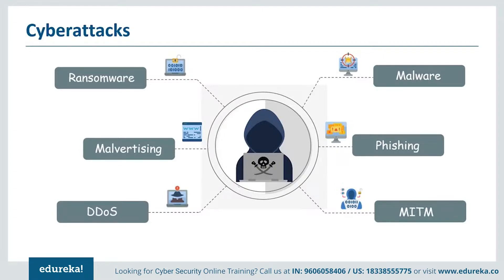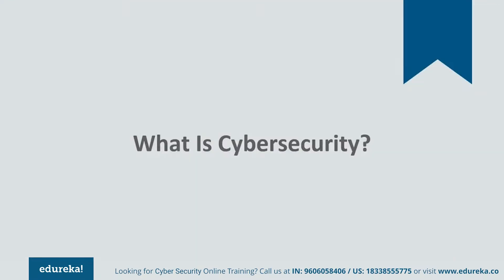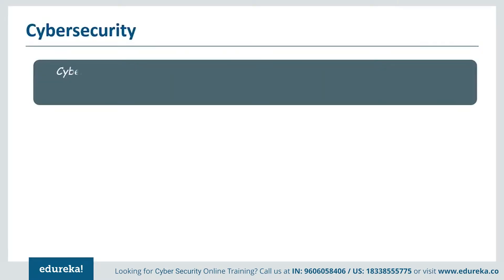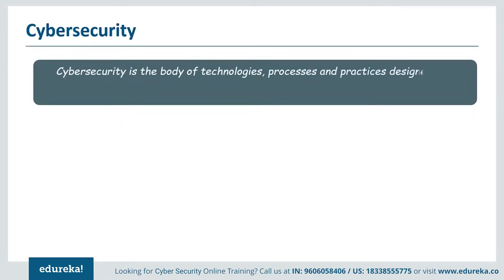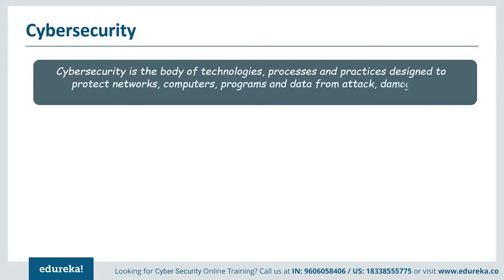Cyber crime is a global problem dominating the news cycle. It poses a threat to individual security and an even bigger threat to large international companies, organizations, banks, and governments. But even with this flawed internet, there are simple things we can do to protect ourselves. This is where cyber security comes in — defined as techniques and practices designed to protect your digital data that is stored, transmitted, and used on an information system. After all, the data is what criminals want; networks, servers, computers, and gadgets are just mechanisms to get to it.